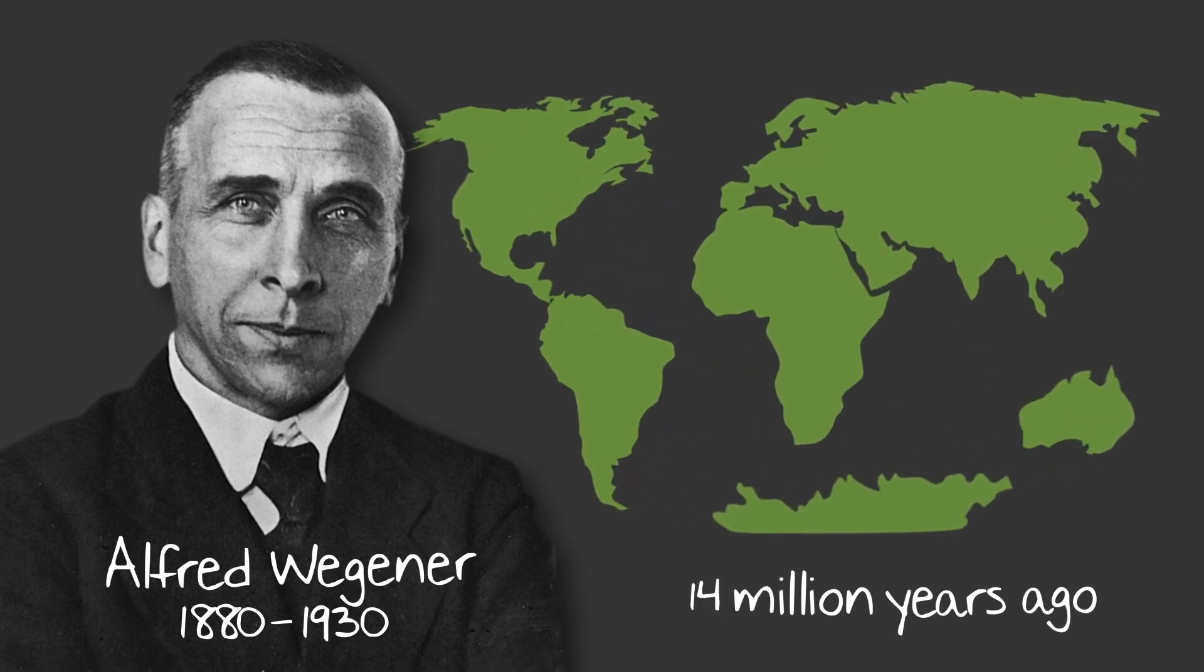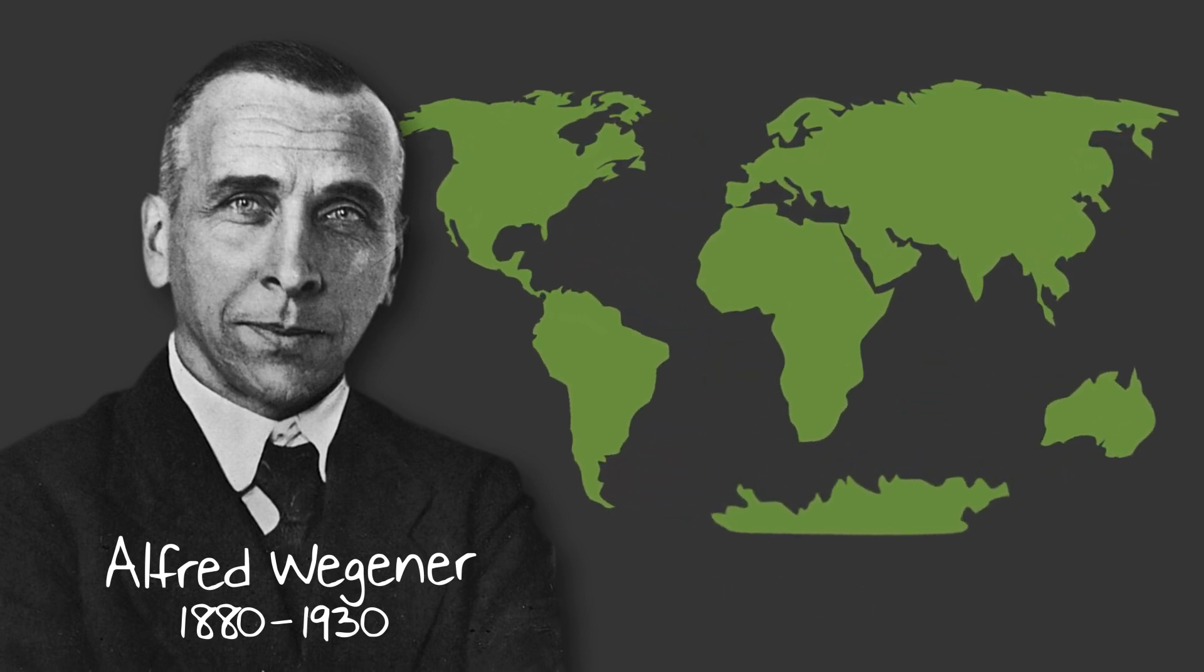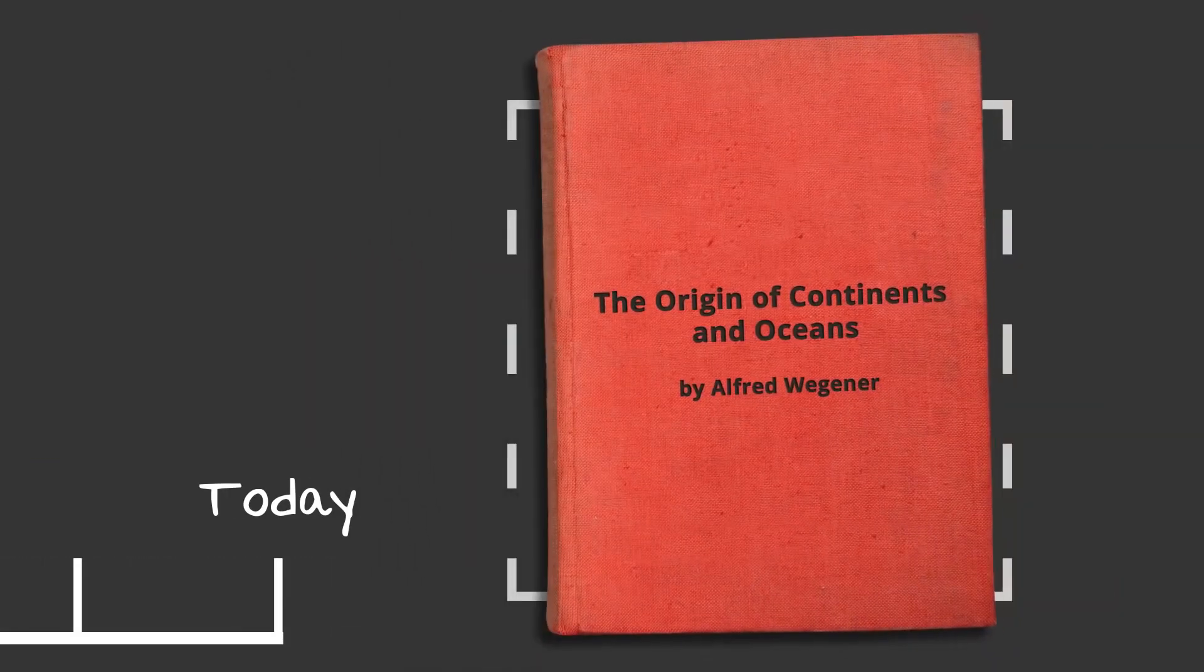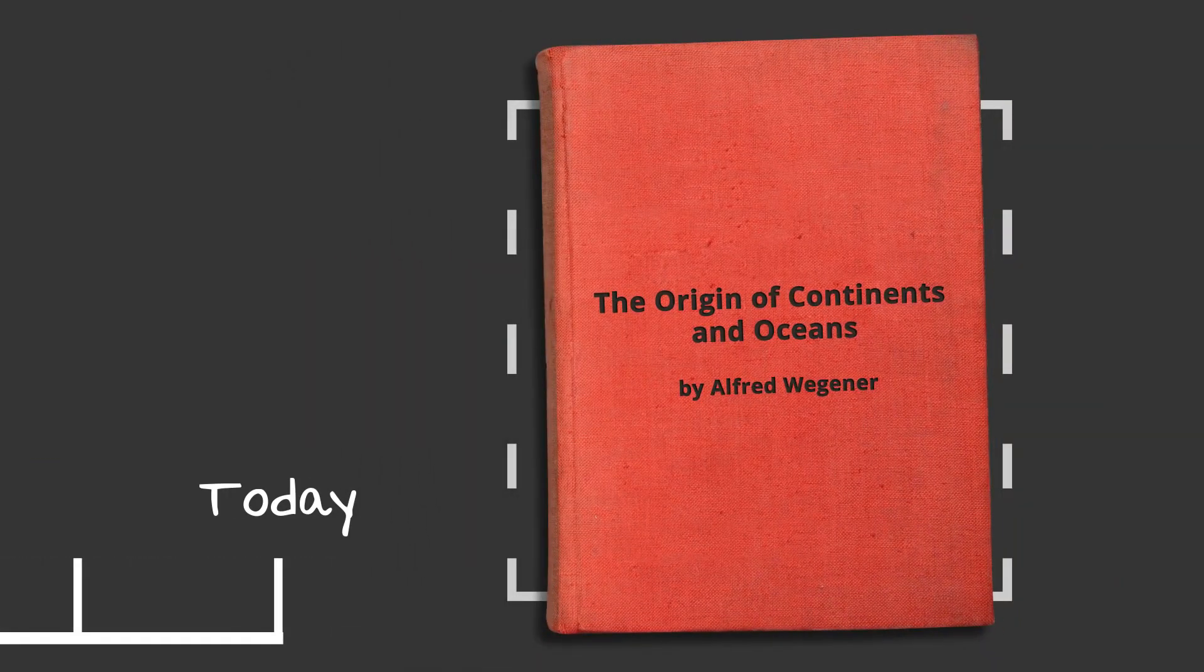Over the course of millions of years, Pangaea broke apart into the continents we know today, a process he called continental drift. Although his theories explained quite a bit about the origins of the Earth, scientists at the time weren't exactly impressed and initially dismissed his ideas. Fast forward to today, and Wegener's concepts are the basis of the modern-day plate tectonics theory.